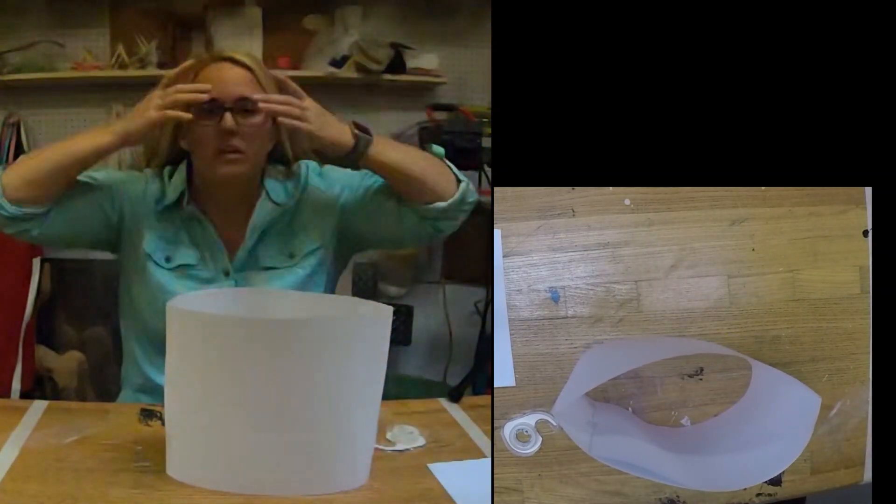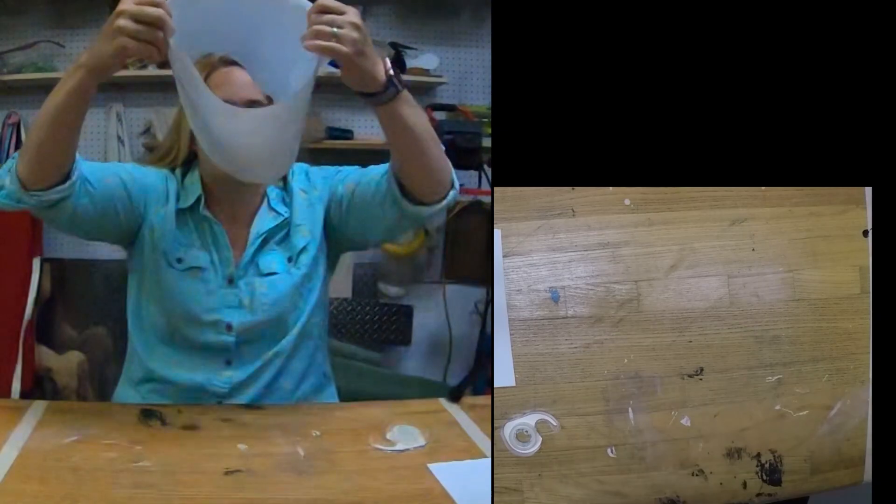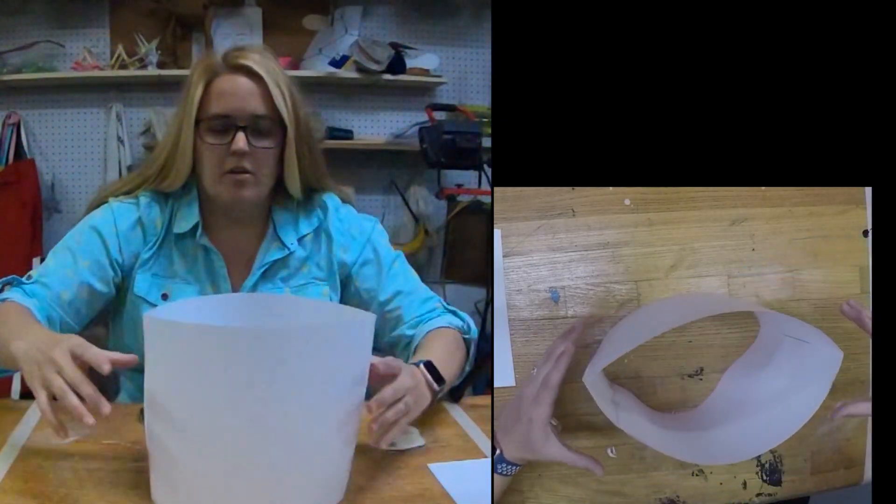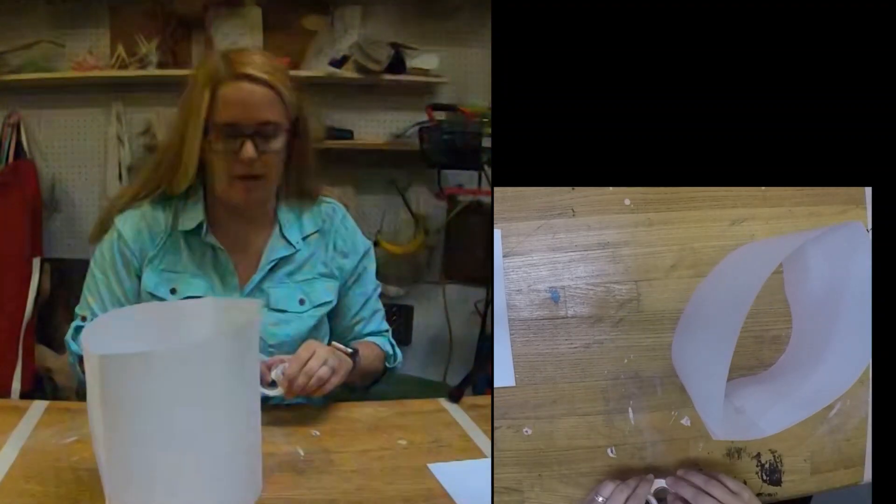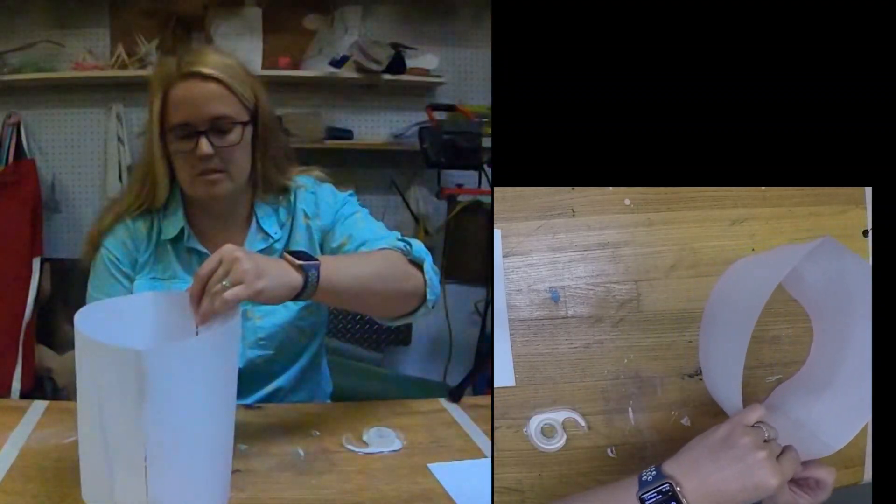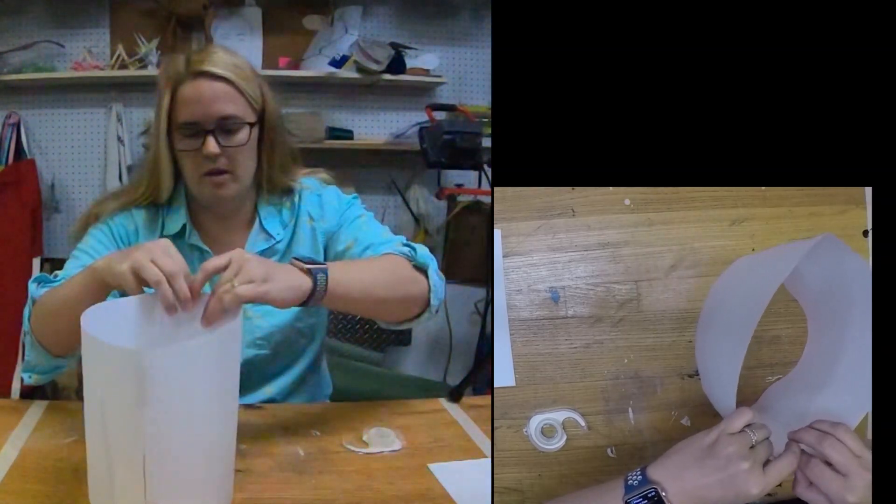Now, so this part of the hat is the vertical part that actually sits on my head like this. Now, this seems a little bit insane. But kind of the point of the Kentucky Derby hat is to make it kind of flamboyant and ridiculous.